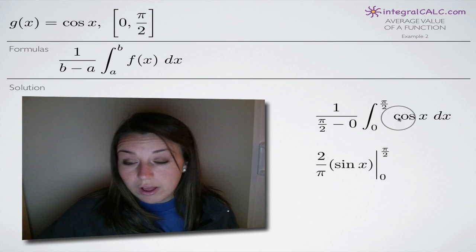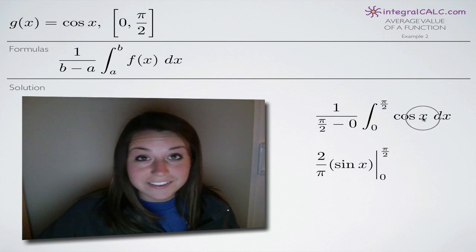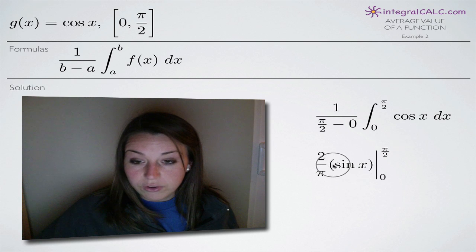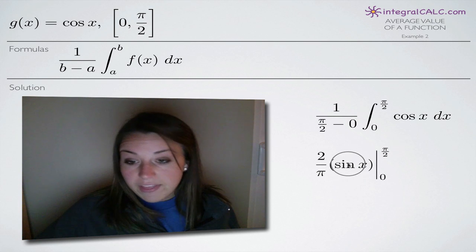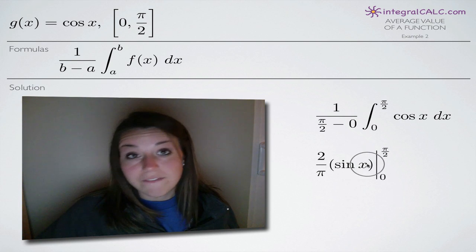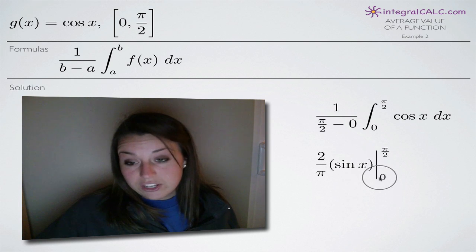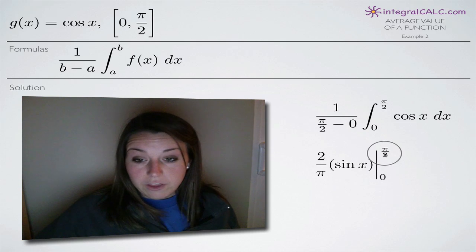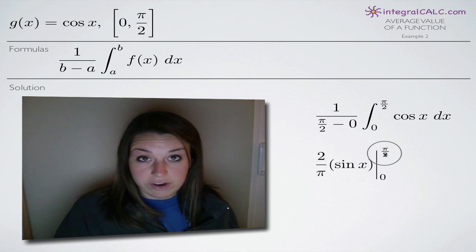The integral of cosine of x is sine of x. So when we take the integral, we get sine of x, and we're going to be evaluating on the range zero to pi over two.